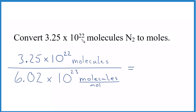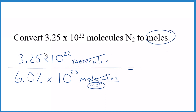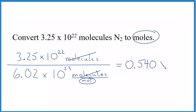We have our molecules from the problem and Avogadro's number — we're dividing. Molecules appear on top and bottom, so they cancel out, meaning we'll have moles when we're done. So 3.25 divided by 6.02 is 0.540, and for the exponents, we subtract 22 minus 23, giving us 10 to the minus 1.